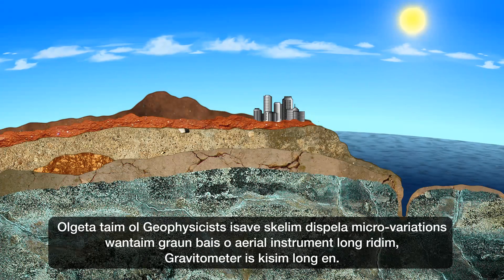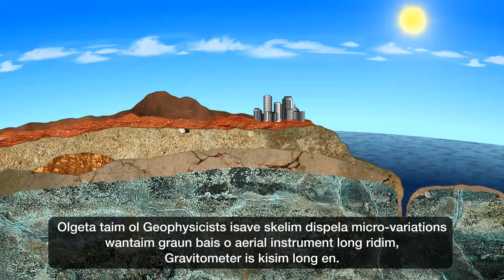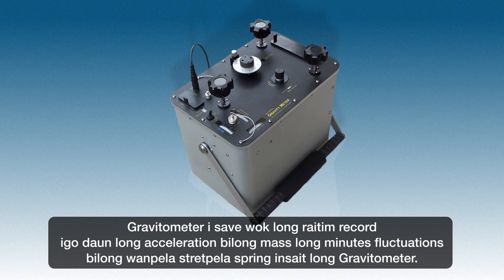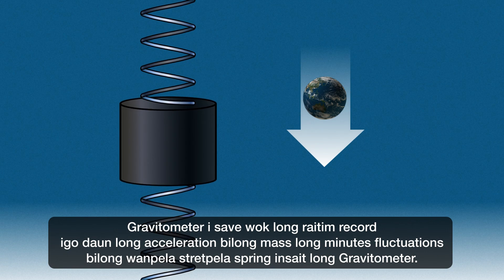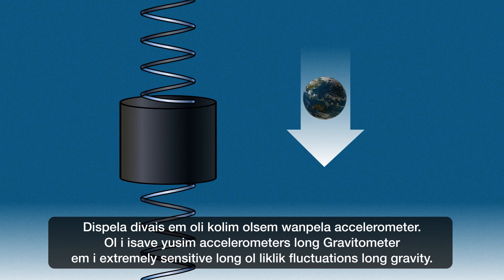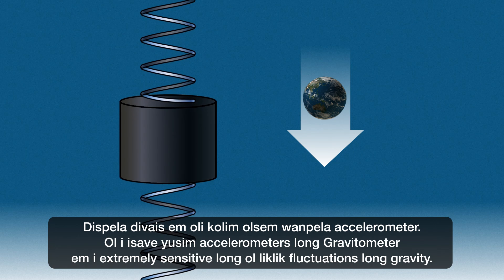Geophysicists routinely measure these micro-variations using either ground-based or aerial instrument readings, taken by a gravitometer. A gravitometer works by recording the downward acceleration of mass from the minute fluctuations of a finely balanced spring within the gravitometer. This device is known as an accelerometer, and the accelerometers used in gravitometers are extremely sensitive to small fluctuations in gravity.